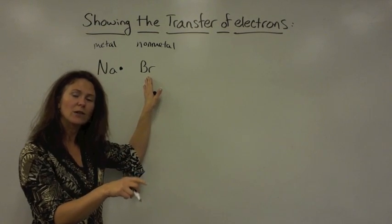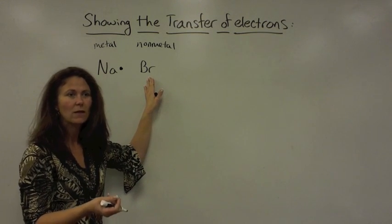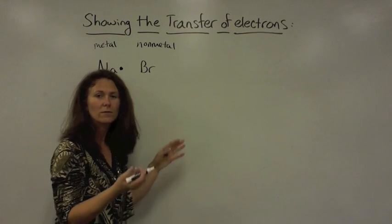Bromine, if you notice on the periodic chart, is in group 7A, so it has seven valence electrons, and that can be represented with seven dots.